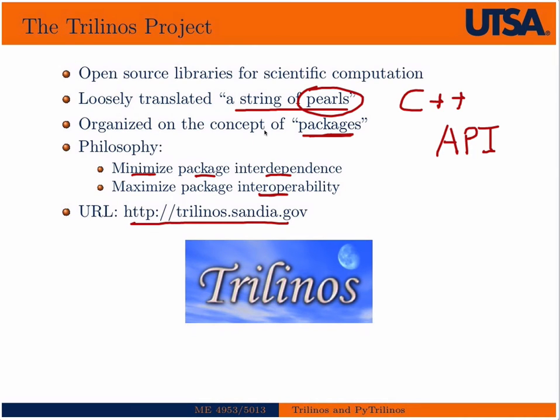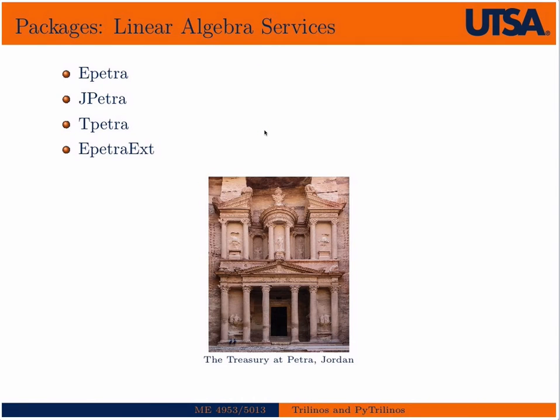And the website is here, and we're going to go to that website in just a few minutes. But briefly, I want to go over some of the packages in Trilinos. There's many, many packages, over 30 I think now. But let's go over some of the important ones really quickly. So probably the most important is Epetra. Epetra, of course, is a city in Jordan, but it's also a Greek word for foundation. So you can think of Epetra as the essential foundation.